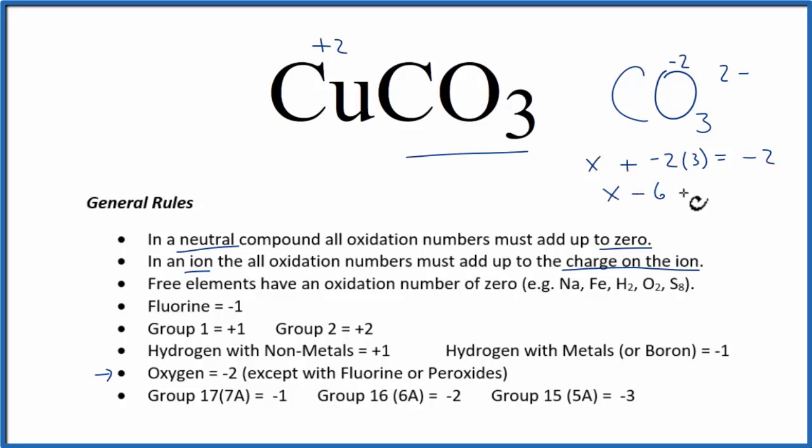So X minus 6 equals minus 2. X is going to equal a positive 4. And that positive 4, that's the oxidation number on the carbon. The oxygen we know has a minus 2.